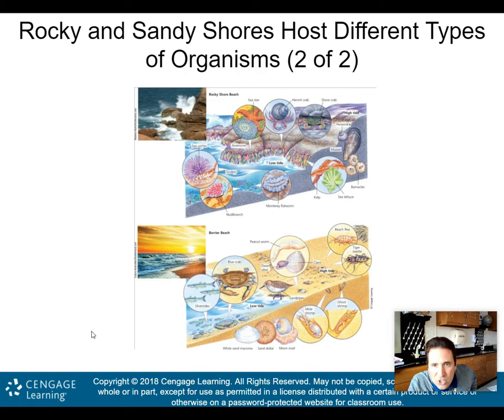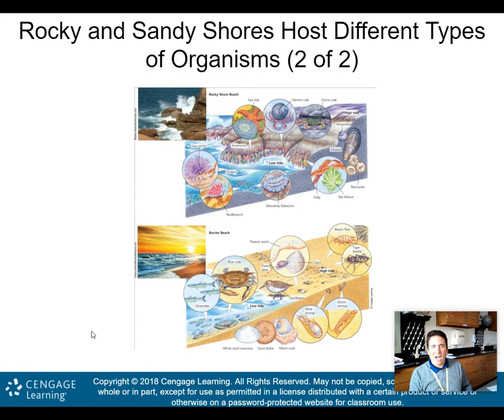You can think of these different zones — the intertidal zone, rocky shores, barrier beaches — as different biomes. Different creatures have evolved to live in each zone, which generates biodiversity. On the rocky shore you'll see sea stars and hermit crabs; on the more sandy barrier beaches, crabs and peanut worms. Understand the difference in biodiversity between these different aquatic life zones.